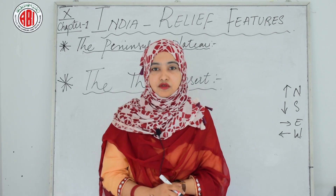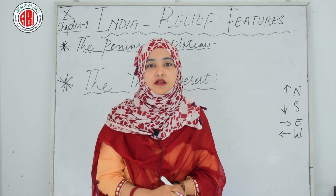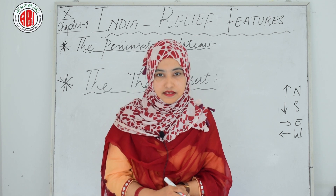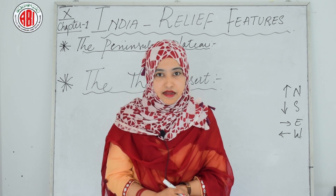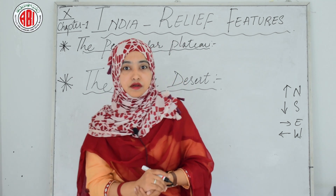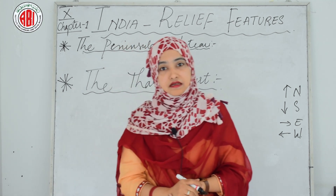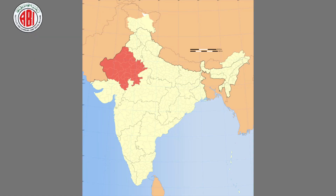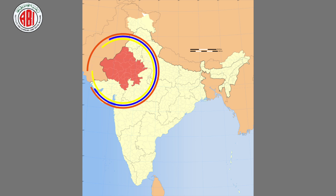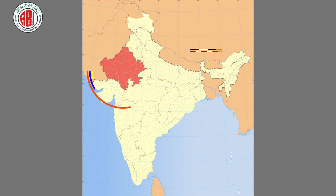After the Peninsula Plateau, we move to the next topic — the Thar Desert. The Thar Desert is located on the leeward side of the Aravalli range and receives very little rainfall, ranging from 100 to 150 millimeters per year.